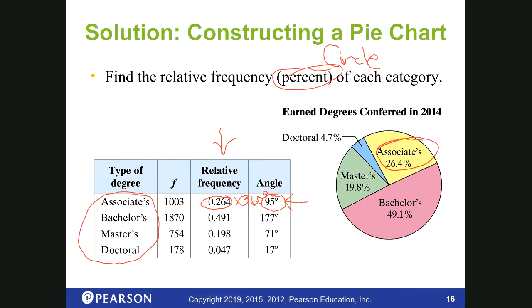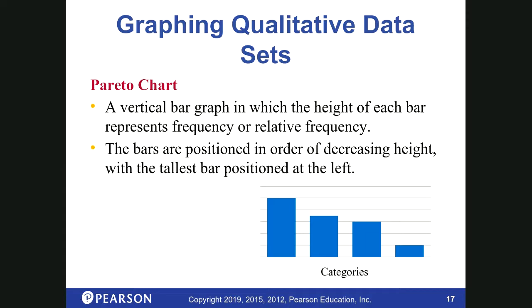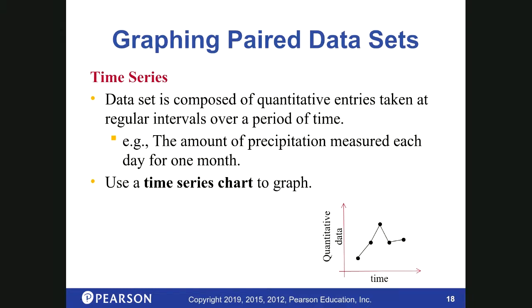There are some other chart types you may run across. A Pareto chart is a bar graph where the bars are always arranged in order of decreasing height — that's all it means. A time series graph shows how something changes over time; that requires quantitative data. I don't ask you about these on tests, but you might see them. Those are the different kinds of graphs, and you'll be asked questions about some of them in your homework.